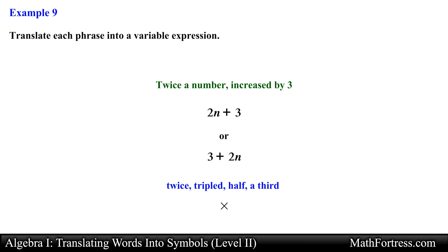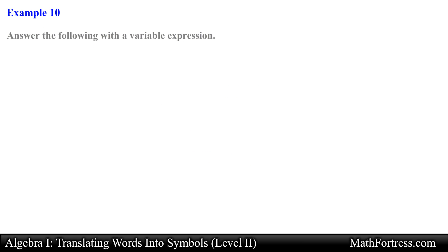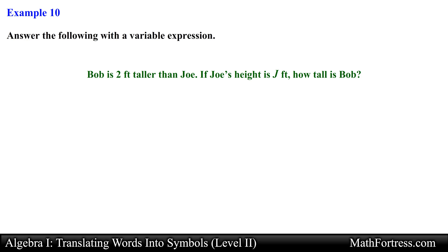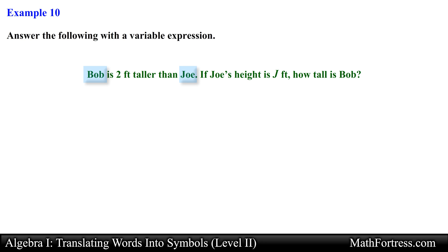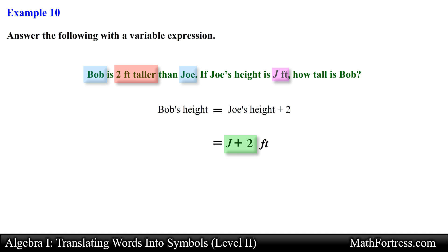Now let's go over examples that involve translating phrases that are slightly more practical. It is important to read the question as many times as it takes to understand it completely. The question describes the heights of Bob and Joe, asking how tall Bob is given that Bob is 2 feet taller than Joe. Since Joe's height is represented by the variable j, Bob's height is equal to j plus 2 feet.